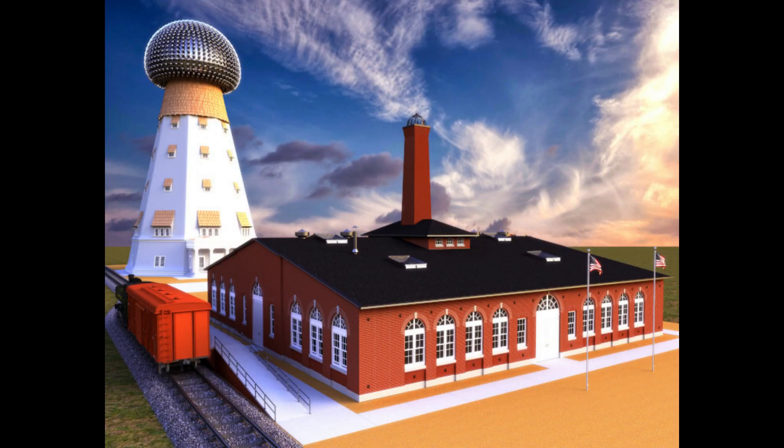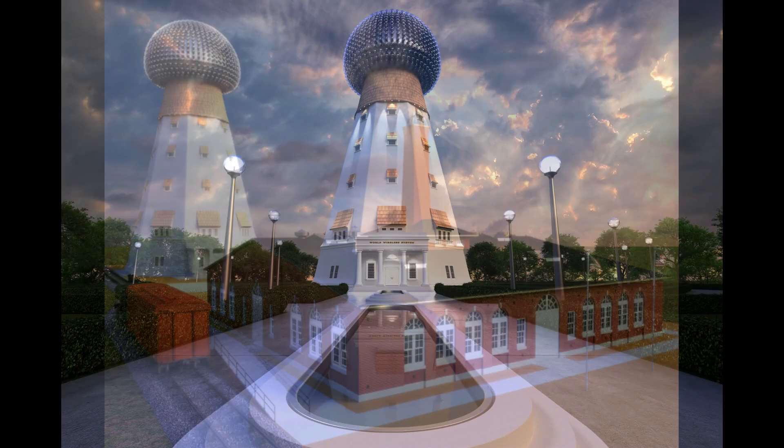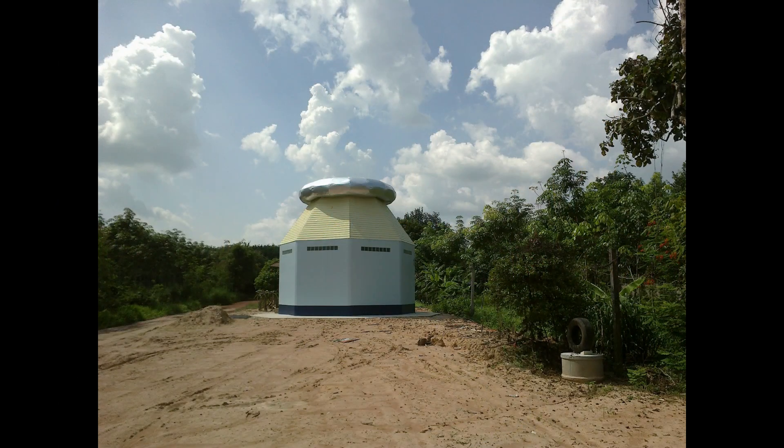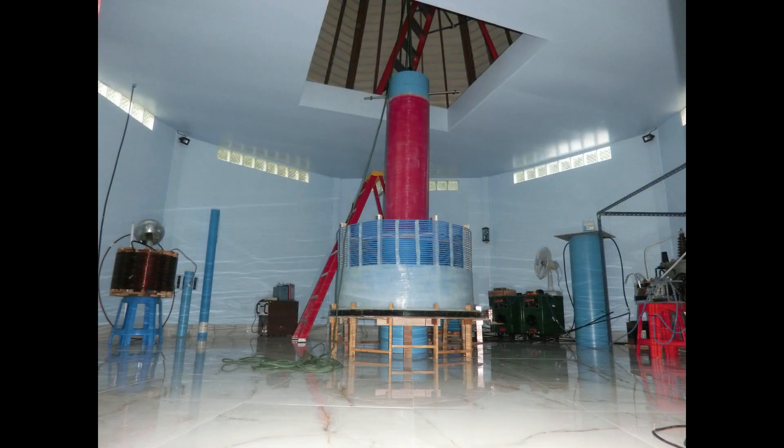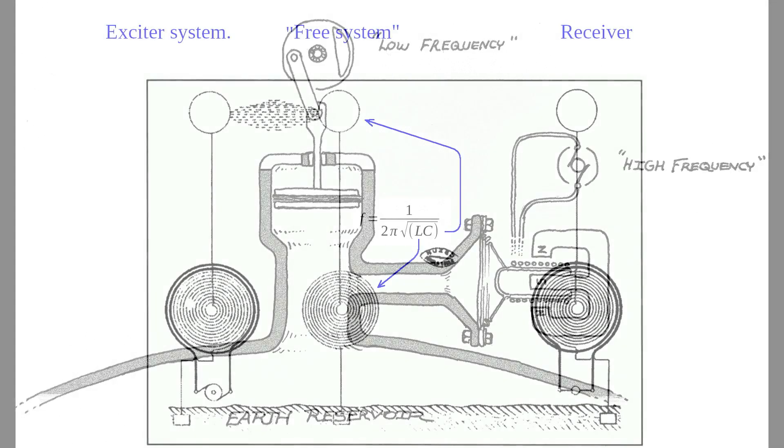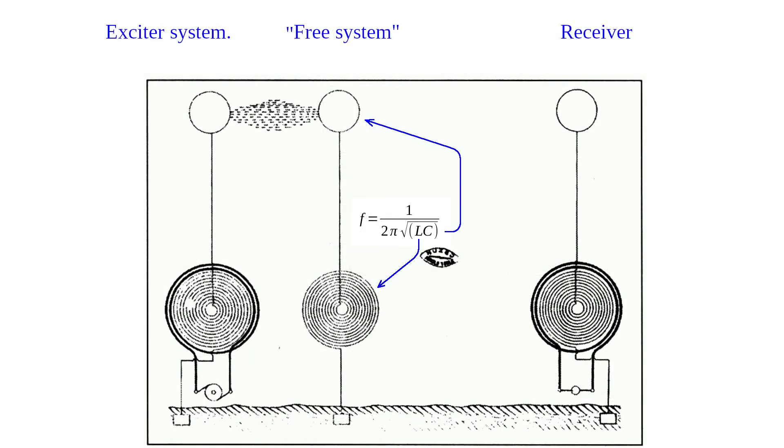Although I have not yet found definite proof, I think that at Wardenclyffe, Tesla just set a spark gap frequency to be in sync with the standing wave inside the Earth. This works perfectly, as I have found in my own experiments. The low frequency longitudinal standing wave compresses the medium, enabling the efficient propagation of higher frequencies, which would otherwise dissipate.